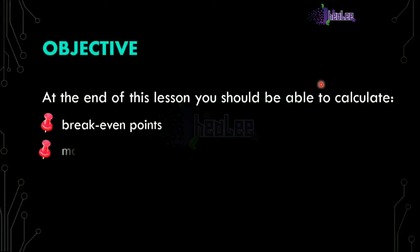We'll also calculate margin of safety. Margin of safety is basically the excess of budgeted or actual sales over break-even volume of sales. It states the amount by which sales can drop before losses begin to be incurred. We're going to look at calculating that very soon.